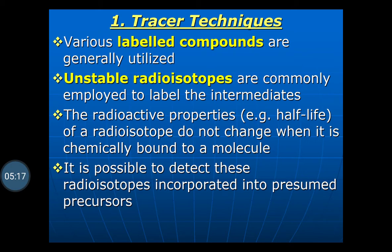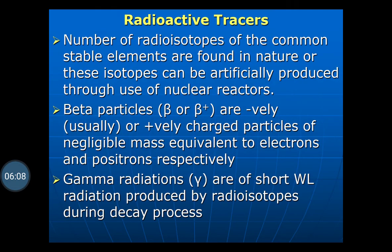In the tracer technique, various labeled compounds are generally utilized. Unstable radioactive isotopes are commonly employed to label the intermediates — unstable isotopes which emit radiation. The radioactive properties, that is the half-life of the radioactive isotope, do not change when it is chemically bound to the molecule. These radioisotopes do not change their emission of radiation when bound to the molecule. It is possible to detect the radioisotopes incorporated into the presumed precursor easily.